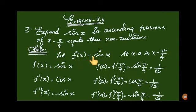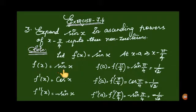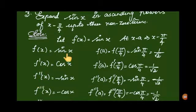Assume the function f of x equals sin x. In the Taylor series formula, a is replaced by x minus pi by 4. So f of x is sin x. Differentiating sin x gives cos x, that is f dash of x equals cos x.